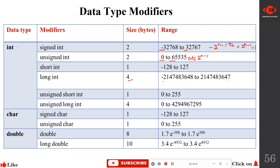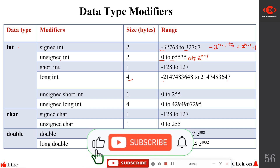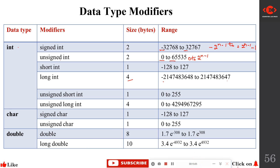Today we learned what data types are, what primitive or fundamental data types are, derived data types, user-defined data types, and data type modifiers. If you like this video, please like, share with your friends and family, click the thumbs up, press the subscribe button, and click the bell icon for notifications. The next video is on variables — thank you.